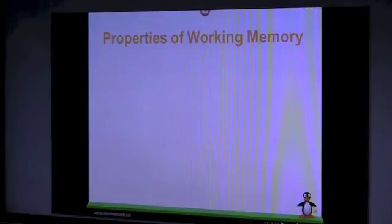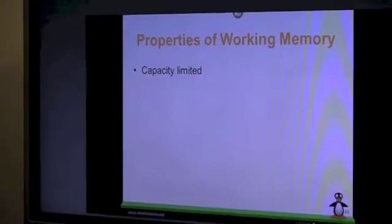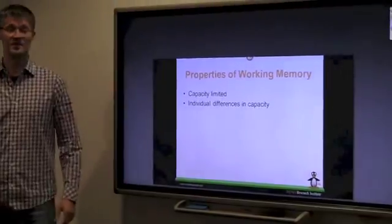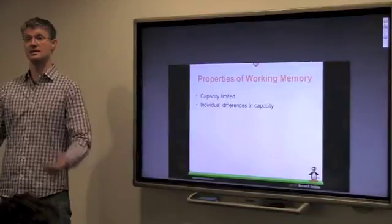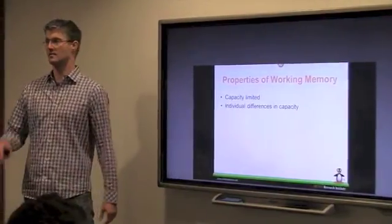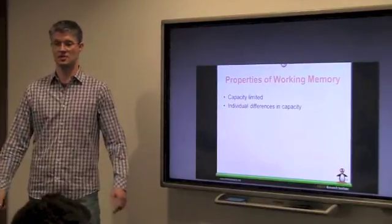There are certain properties that researchers have identified about working memory. One thing we know is working memory capacity is limited. There is not an indefinite amount of information we can hold in our mind at any point in time. There are individual differences in capacity. Some people have higher capacity than others. There are also general trends. On average, the older we get, it seems that our capacity goes back. It's just a natural thing.